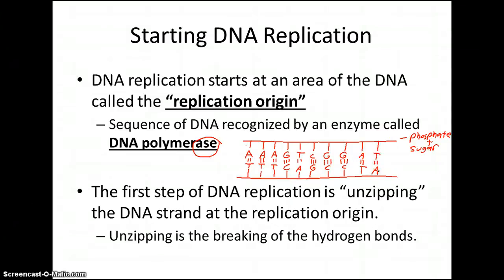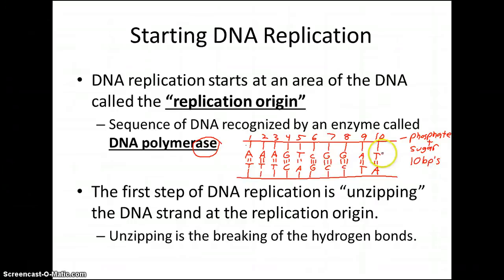Let's take a look at this little sequence we made. This sequence is one, two, three, four, five, six, seven, eight, nine, ten — this would be ten base pairs long, because we have ten pairs of bases hooked together with these hydrogen bonds.